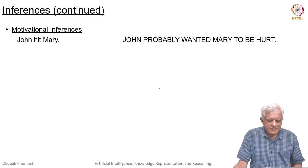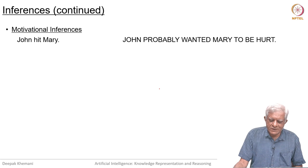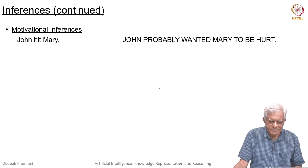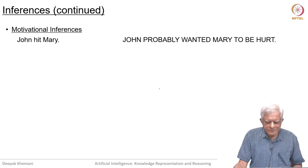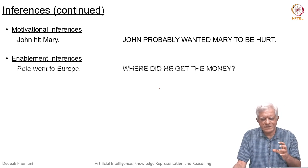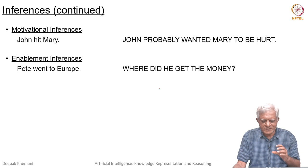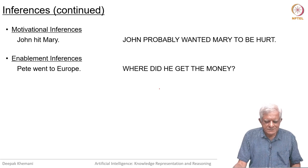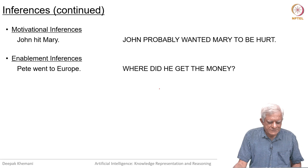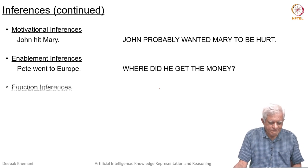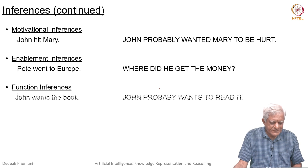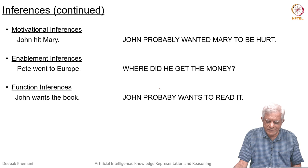Motivational inferences: John hit Mary — John probably wanted Mary to be hurt. All this comes from the way we represent the meaning of words like 'hit' and so on. Pete went to Europe — where did he get the money from? Functional inferences: John wants the book — John probably wants to read it.